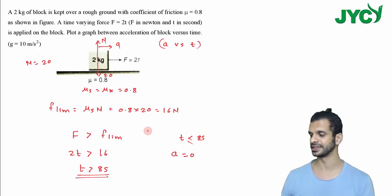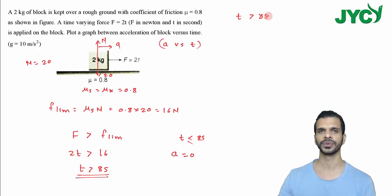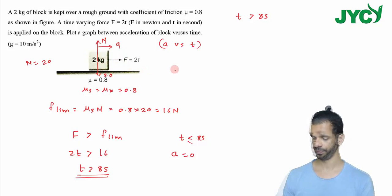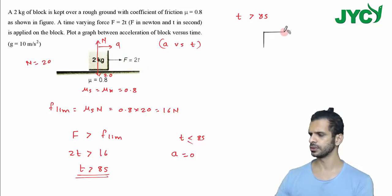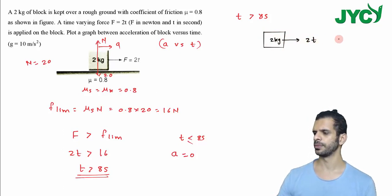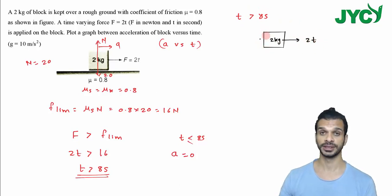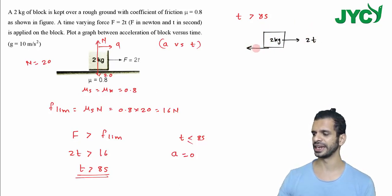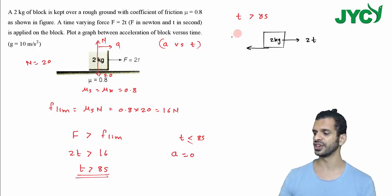When time t is greater than 8 seconds, the block starts moving. On this 2 kg block, the applied force is 2t. When the force is greater than 16 Newton, the block starts moving. Now the friction acting is kinetic friction. In this example, mu_s and mu_k are both the same, so the kinetic friction value is also 16 Newton.